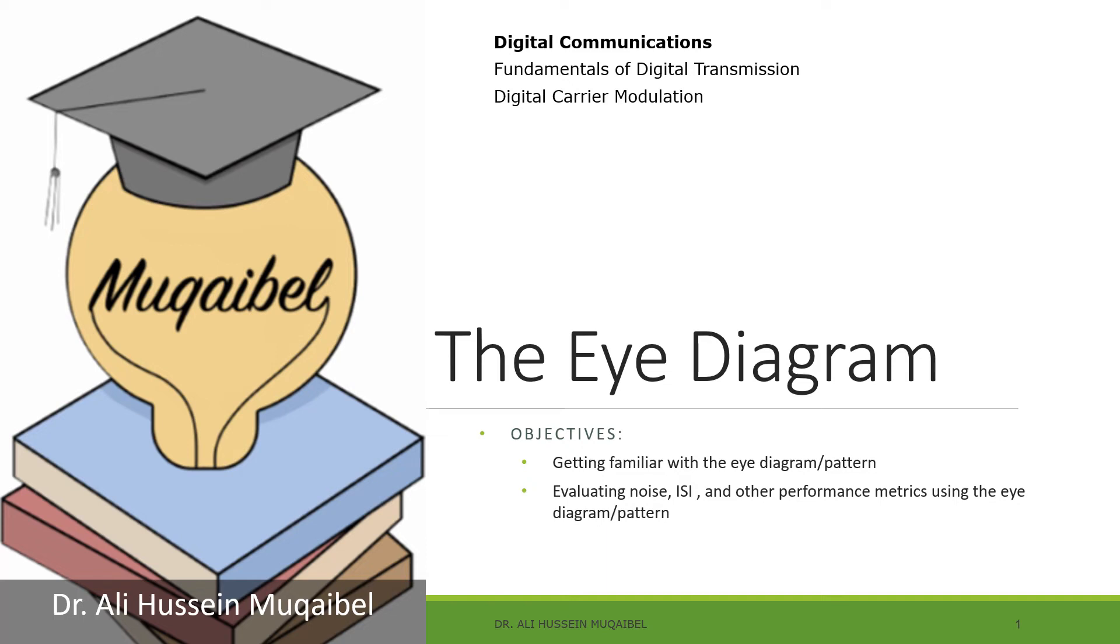Now let's discuss the eye diagram. Our main objective is to get familiar with the eye diagram or pattern, and then use this diagram to evaluate the noise, inter-symbol interference, and other performance metrics like time jitter. We'll get exposed to the eye diagram and see how we use it, and we'll look at some examples.